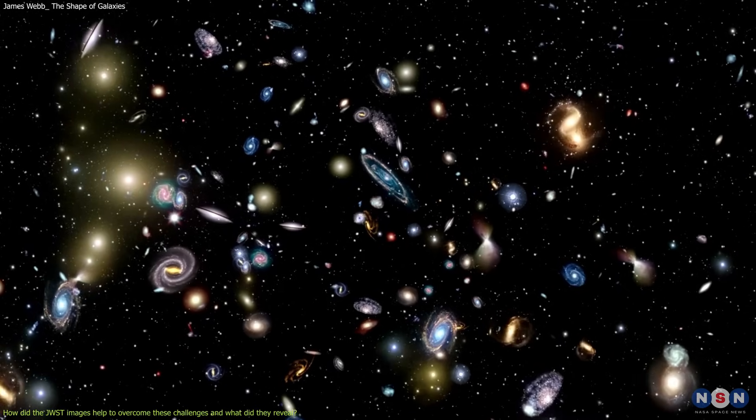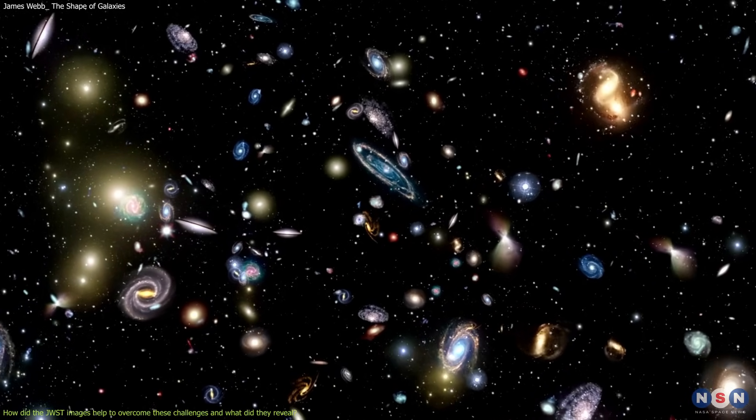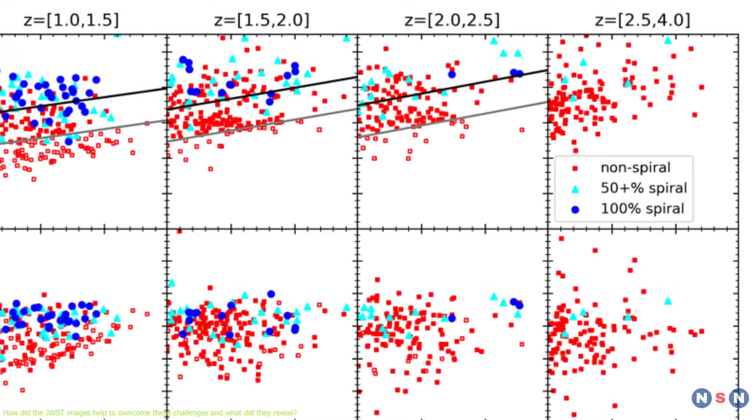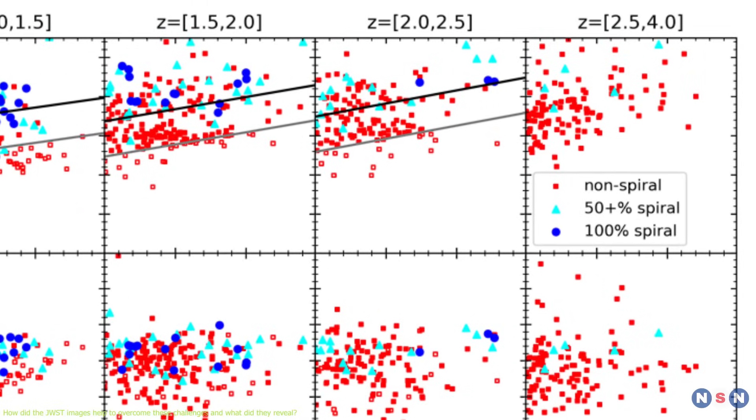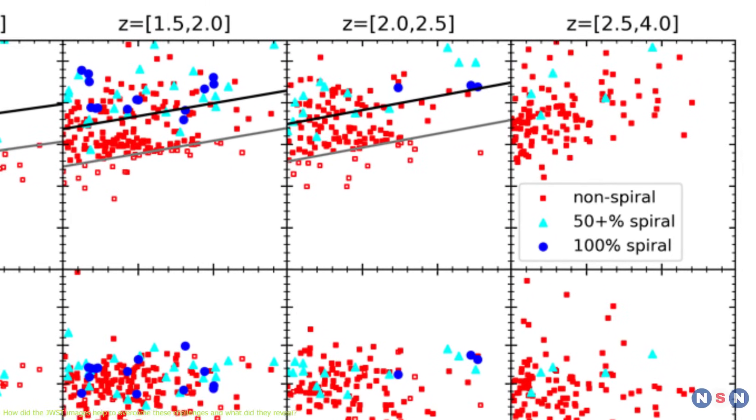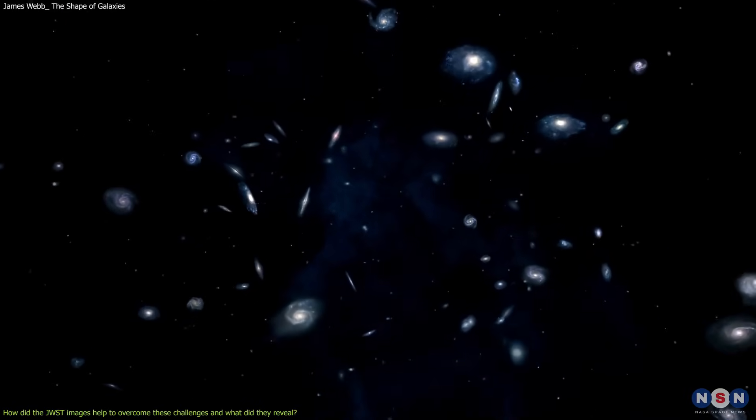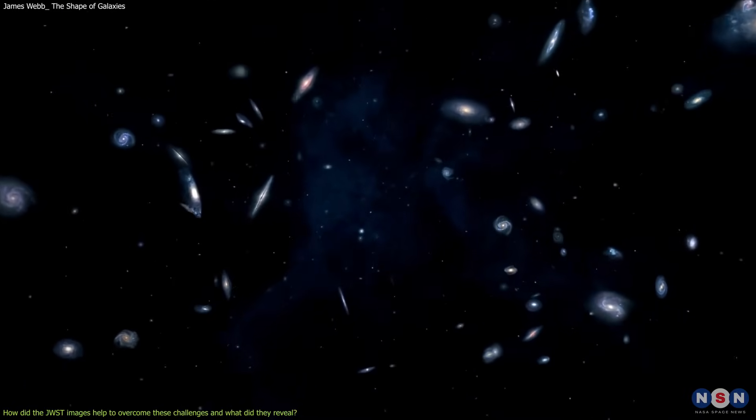They even detected possible spiral-like features at redshifts higher than 3, which is very surprising and exciting. They also found 11 galaxies with a spiral vote of at least 3 at z greater than 3 out of 113 galaxies in that redshift range. This means that about 10% of the galaxies at z more than 3 were spiral galaxies.